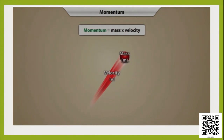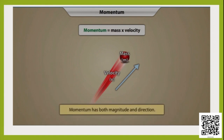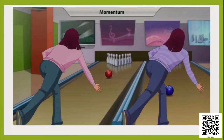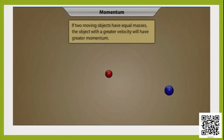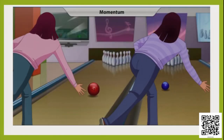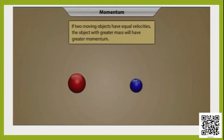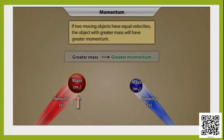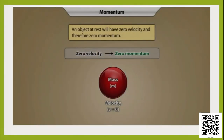Since velocity has both magnitude and direction, and momentum is the product of mass and velocity, momentum too has both magnitude and direction. If two balls of equal mass travel at different velocities, the ball with greater velocity has greater momentum. If two balls of different masses travel at the same velocity, it requires greater force to stop the ball with greater mass because it has greater momentum. An object at rest has zero velocity and therefore zero momentum.